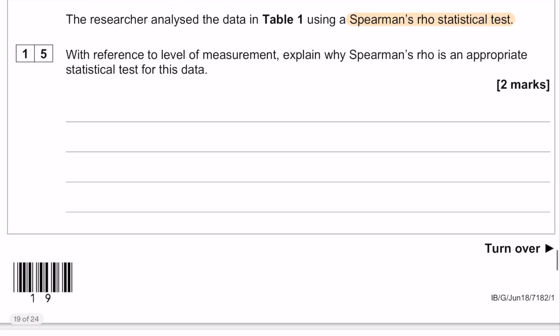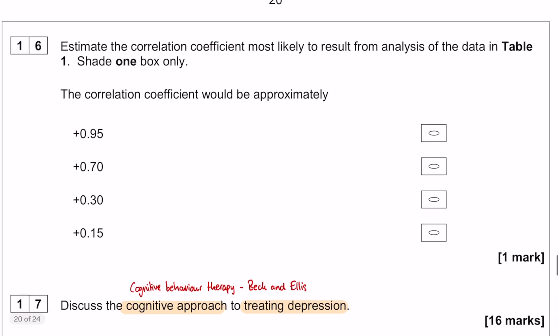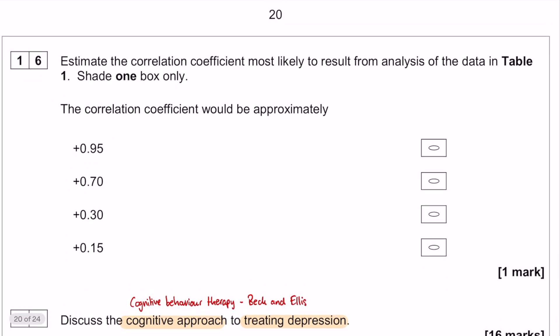Question number 15 is a statistical test question with reference to levels of measurement — explain why Spearman's Rho is an appropriate statistical test. That is a nuanced question because you're only allowed to refer to levels of measurement. And then question number 16 is another multiple choice question: estimate the correlation coefficient for that particular graph you've just drawn.